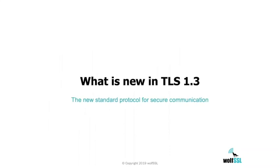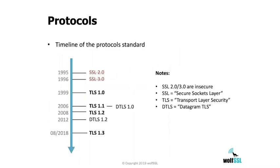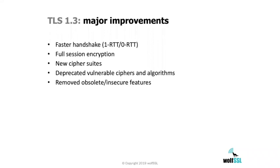Next, we'll talk about the novelties introduced in TLS 1.3, the new protocol specification for secure communication. TLS 1.3 is the successor of TLS 1.2, which had been out for about 10 years and was replaced in August 2018. We already had a preliminary implementation while TLS 1.3 was in a very early stage, because we understood how important TLS 1.3 would be in the context of securing communications.